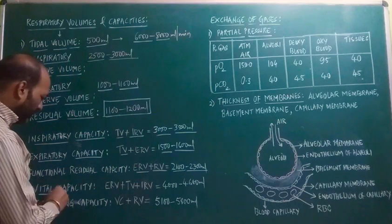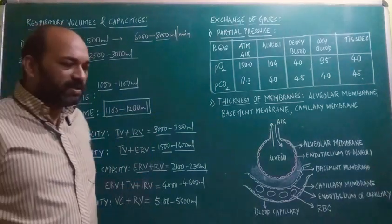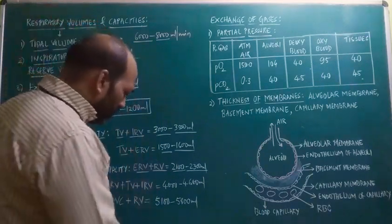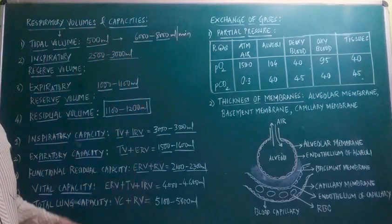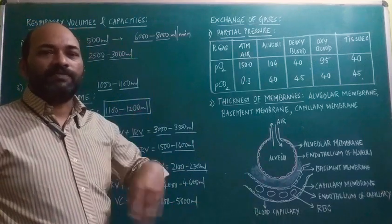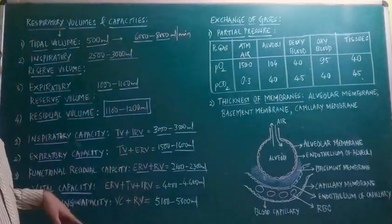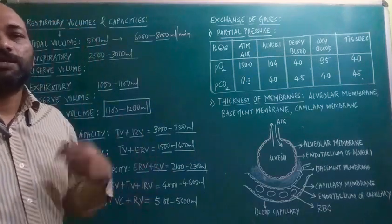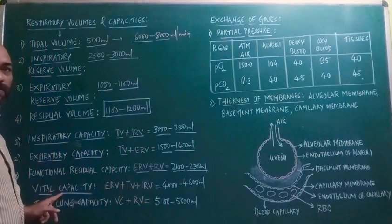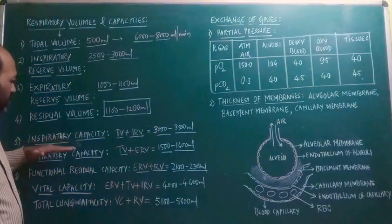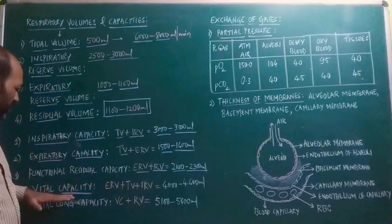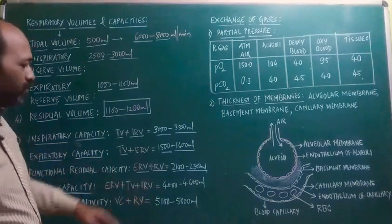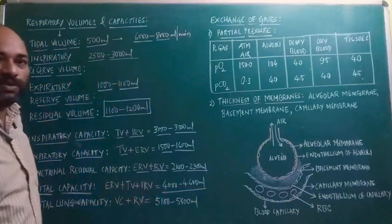Vital capacity is the maximum volume of air a person can breathe in after a forced expiration, or the maximum volume a person can breathe out after a forced inspiration. Vital capacity = ERV + TV + IRV, giving a total of 4,200 to 4,600 ml.